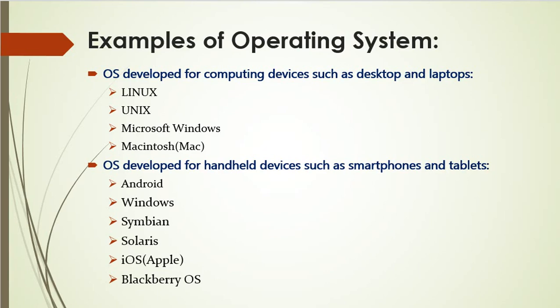Now we will learn some examples of operating systems. According to the devices available in the market, we have computing devices like desktop and laptop, and handheld devices like smartphones and tablets. Operating systems developed for computing devices include Linux, Unix, Microsoft Windows, and Macintosh OS developed by Apple. Operating systems developed for handheld devices include Android, Windows, Symbian, Solaris, iOS (also made by Apple), and BlackBerry operating system.